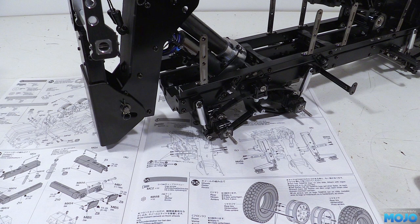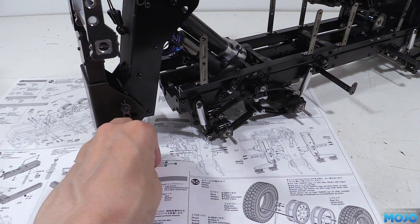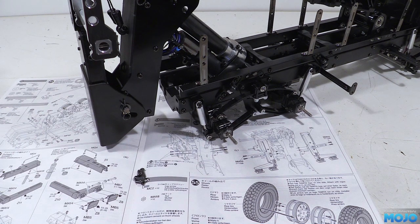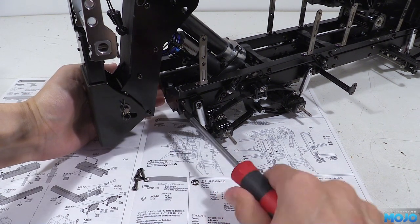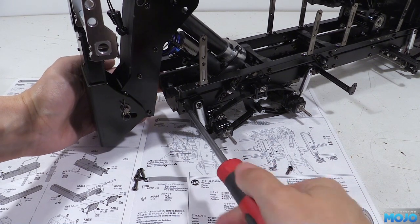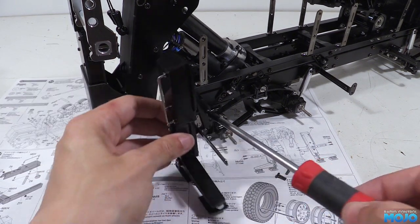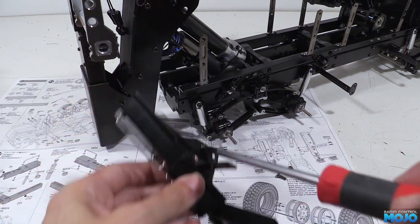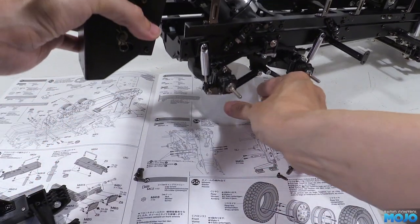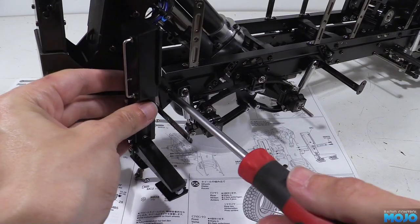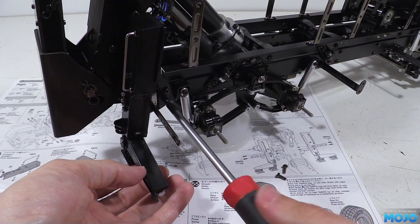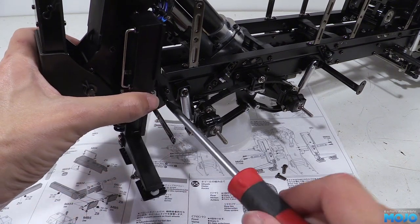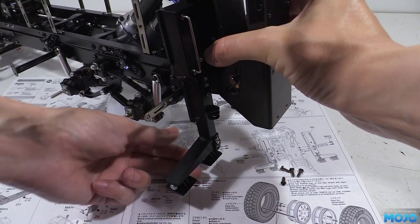Step 54, fitting the legs. Now this is a simple one, we just need four 3x10 self-tappers. But before we can attach the legs we need to remove the 3x8s currently holding in the rear crossmember. Then it's just a case of offering up the leg, screwing in the 3x10s going through the leg mount into the crossmember. It makes it quite a bit easier if you lift up the rear of the chassis, sticking something under the axles works a treat. Fit both legs, give them a test, and that's step 54 complete.